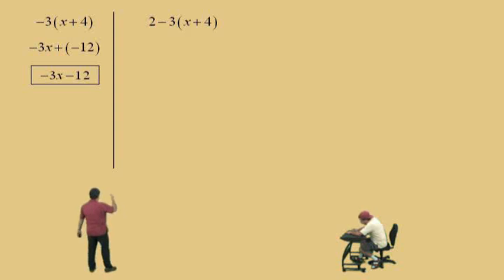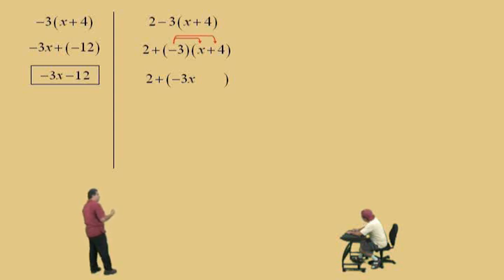Again, we're supposed to do parentheses first, but we can't do it, so we're going to distribute that 3 through. Now, a lot of people like to view that subtract 3 as a negative 3. You can because, remember, adding a negative 3 is the same as subtracting 3. And so, if we bring down the 2, we can distribute that negative 3 through, and say negative 3 times x is negative 3x, and negative 3 times 4 is a negative 12, right?